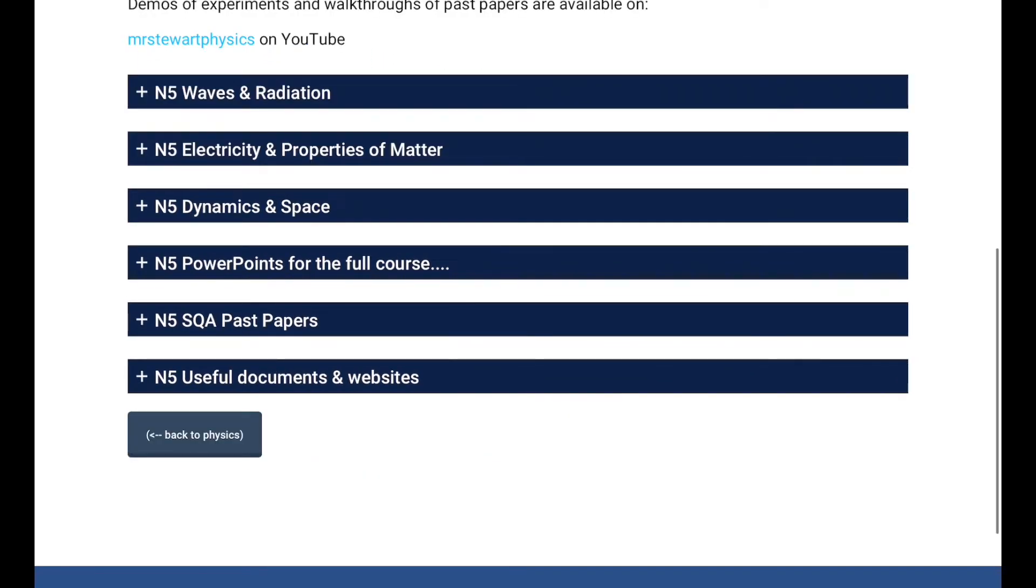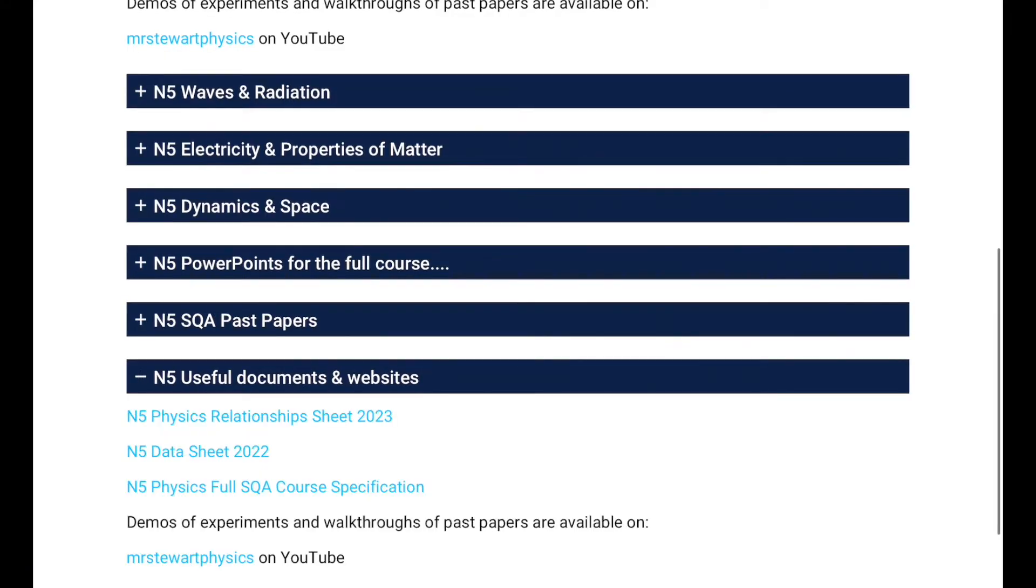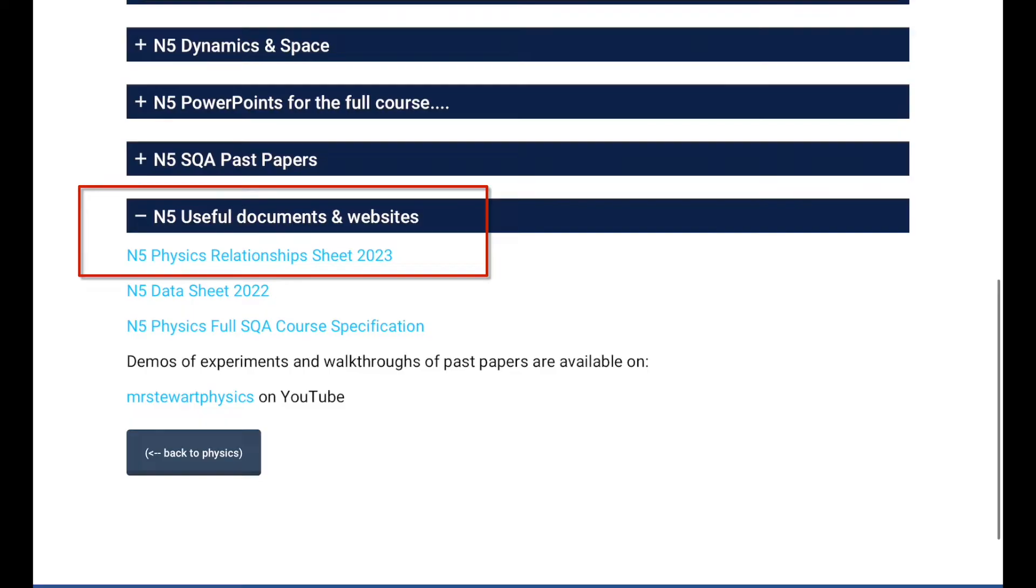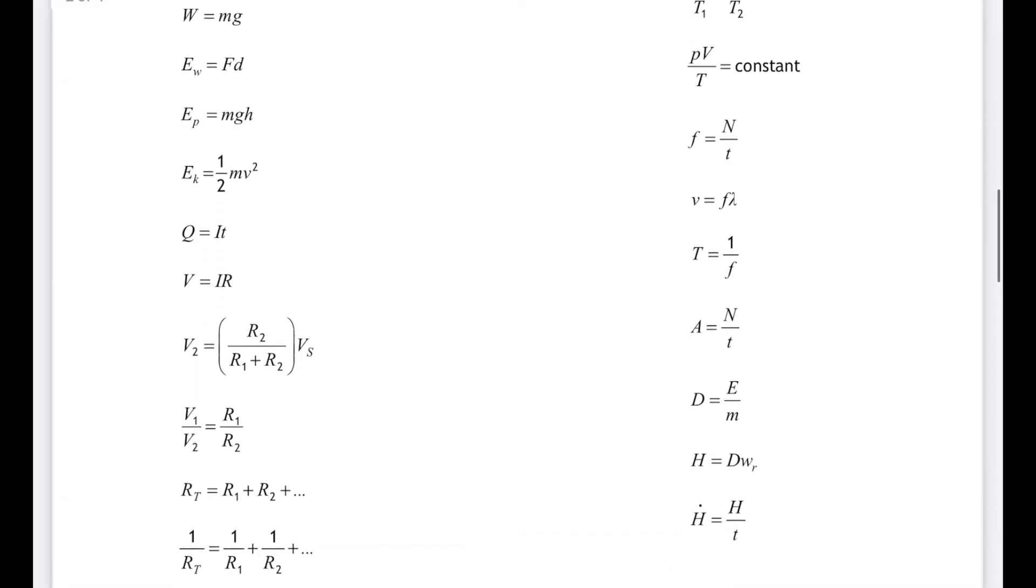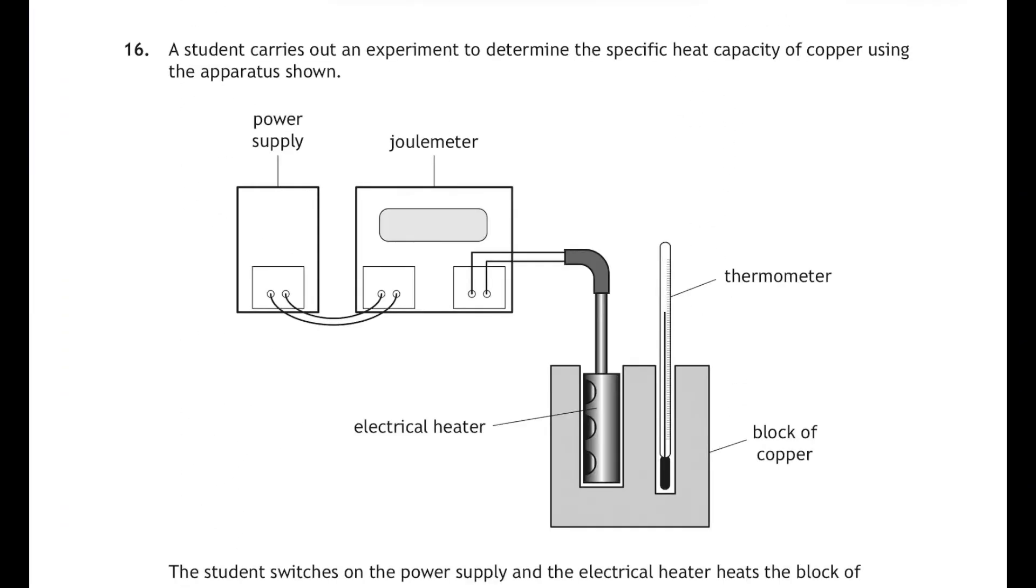And don't forget you will also need your relationship sheet. If you're looking for one, you'll find one on the Calder Glenn High School Physics website on the National Five page under useful documents. Make sure you keep that beside you while you're working through paper one and paper two. It contains all the relationships you might need for the whole National Five Physics course.